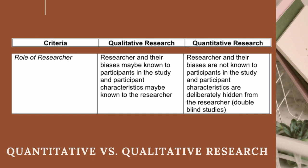Role of researcher: In qualitative research, the researcher and their biases may be known to participants in the study, and participant characteristics may be known to the researcher. In quantitative research, the researcher and their biases are not known to the participants, and participant characteristics are deliberately hidden from the researcher — as in double-blind studies.